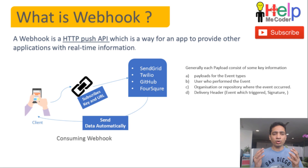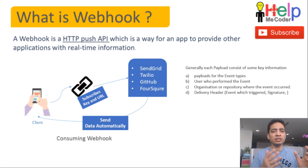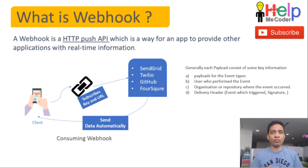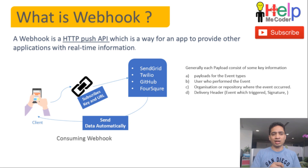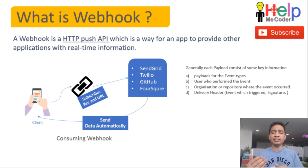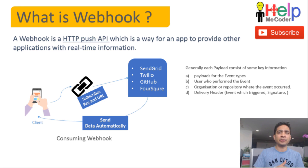A webhook is an HTTP push API — a way for apps to provide other applications with real-time information. There is a setup process for webhooks to work. You need to first subscribe by providing a key — something that identifies the client — and the client and server authenticate each other using this key. You need to provide a subscription key and the URL to the server. This is a one-time job. Once done, the server will keep looking for the information you requested, and once it gets it, it will notify the client.